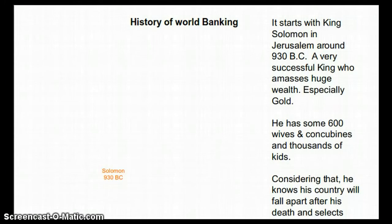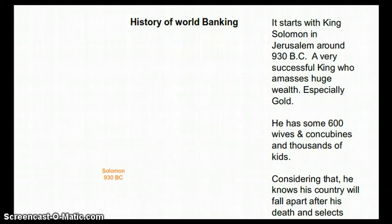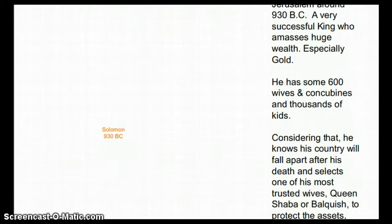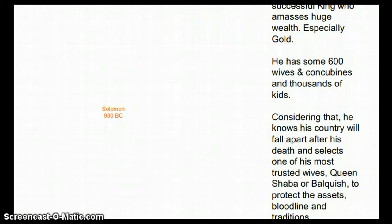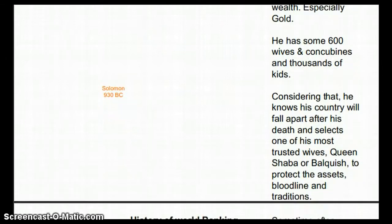The story starts with King Solomon in Jerusalem around 930 BC — a very successful king who amassed huge wealth, especially gold. You've heard of King Solomon's mines and King Solomon's gold. You assume it was in Israel, and it was — but currently it exists in Indonesia. Along with nine-tenths of the world's gold, it is buried underground in Indonesia. Knowing his country would fall apart after his death, Solomon selected one of his most trusted wives, Queen Sheba, to protect the assets.